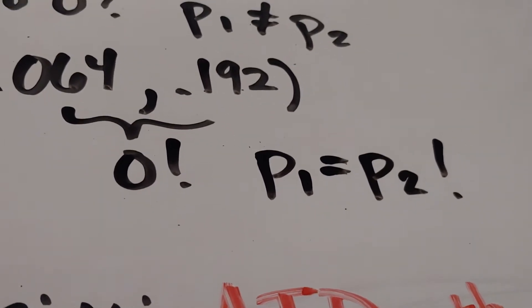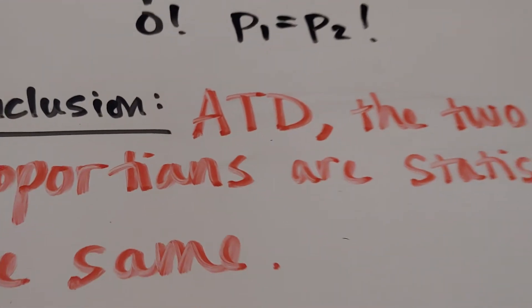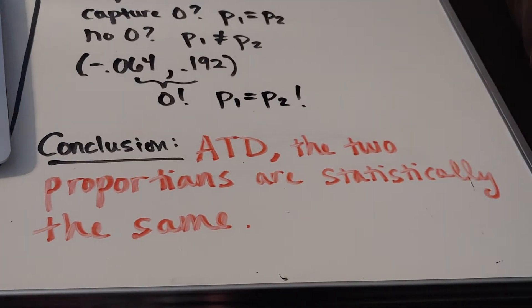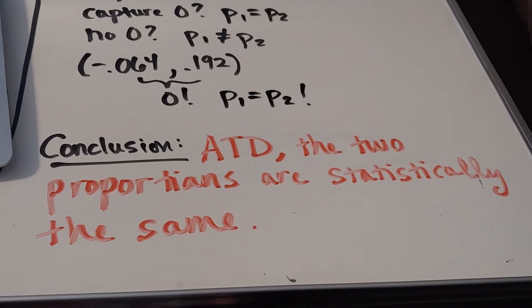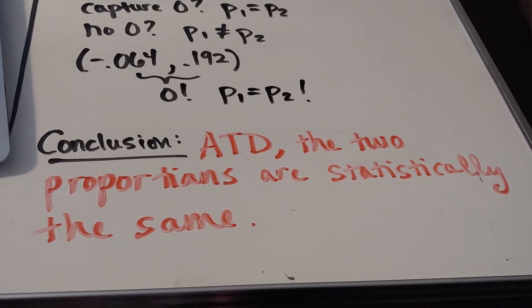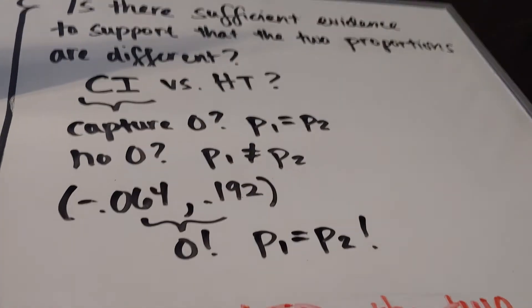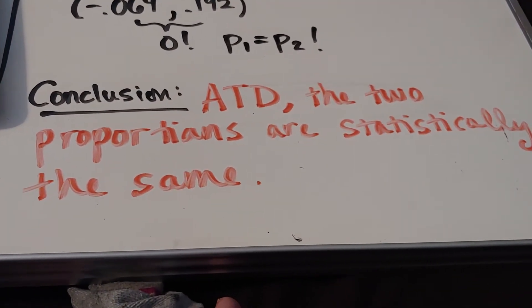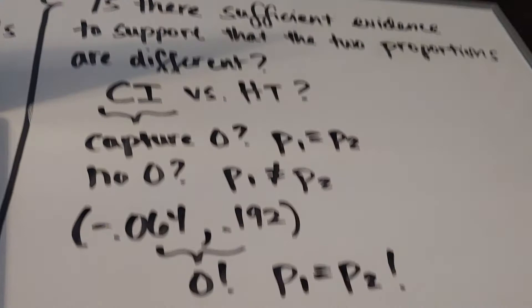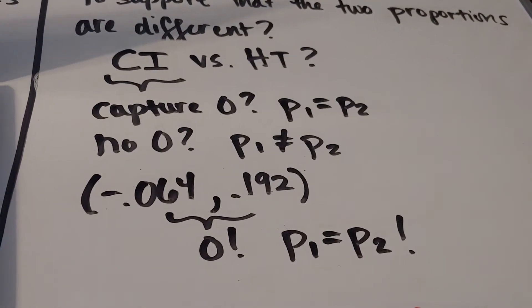I even have my previous conclusion from the hypothesis test still written. According to our data, the two proportions are statistically the same. Yes, that is true. So what you're learning is that if your hypothesis test tells you to keep the null and they're statistically the same, your confidence interval will capture zero.